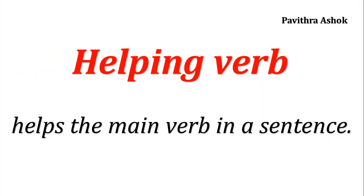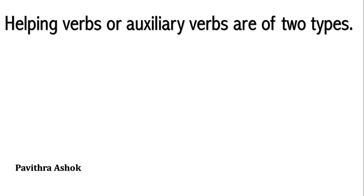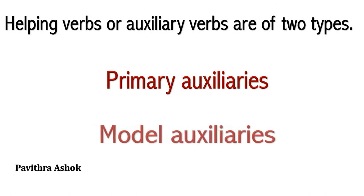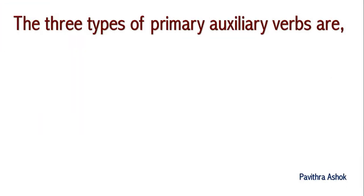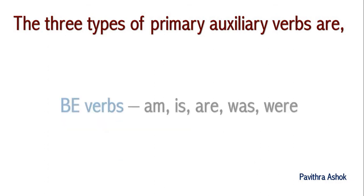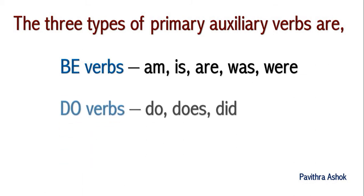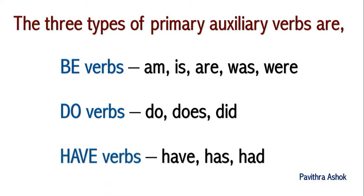We all understood that a helping verb helps the main verb in a sentence. Helping verbs are also known as auxiliary verbs, and are of two types: primary auxiliaries and modal auxiliaries. The three types of primary auxiliary verbs are be verbs — am, is, are, was, were — do verbs — do, does, did — and have verbs — have, has, had.